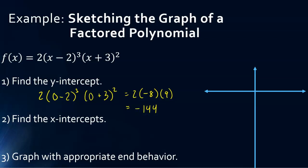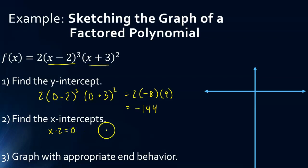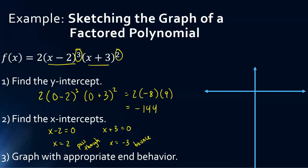Now let's find the x-intercepts. The 2 is not a factor with x, so we don't set 2 equal to 0 — that would give a false statement. The only things we set equal to 0 are factors that have an x. So x minus 2 set equal to 0 gives x equals 2, and x plus 3 set equal to 0 gives x equals negative 3. At x equals 2, the exponent is odd so it's going to pass through. At x equals negative 3, the exponent is even so it's going to bounce off.